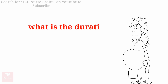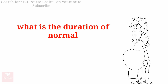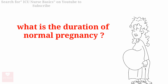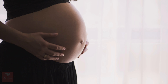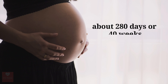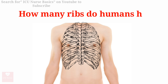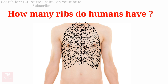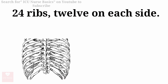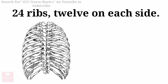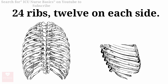What is the duration of a normal pregnancy? The duration of normal pregnancy is about 280 days, that is 40 weeks. How many ribs do humans have? Humans have 24 ribs, 12 on each side.